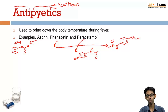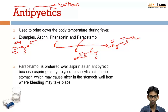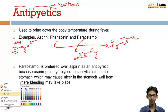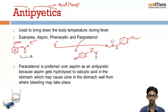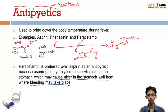A question sometimes asked in exams is: why is paracetamol preferred over aspirin? Both are good antipyretic drugs. The answer is that in the stomach, aspirin undergoes hydrolysis in the acidic medium to form salicylic acid. With an existing acidic group plus additional acid groups formed, this is harmful for the stomach and may cause ulcers in the stomach wall, from where bleeding may take place. That is why aspirin is not preferred and we prefer paracetamol.